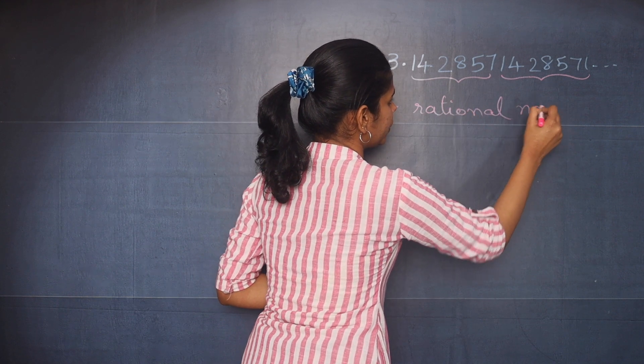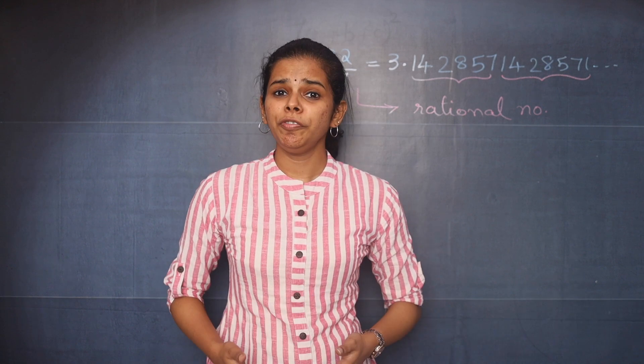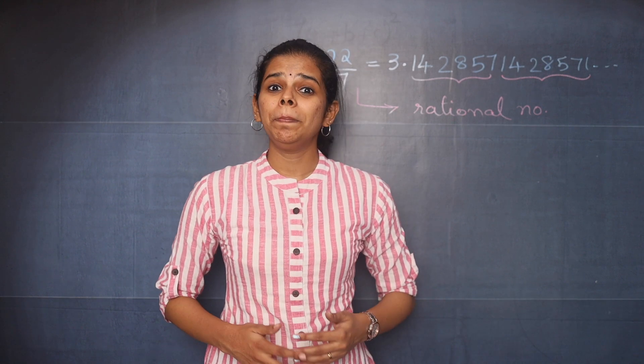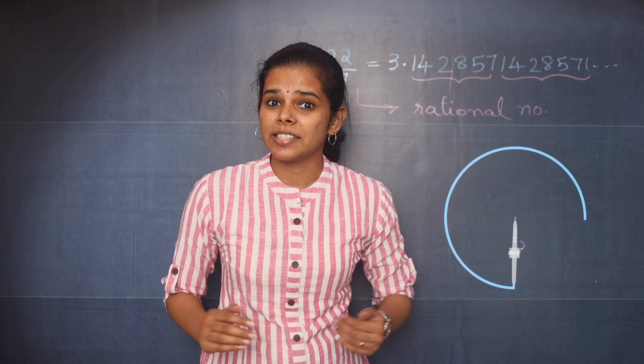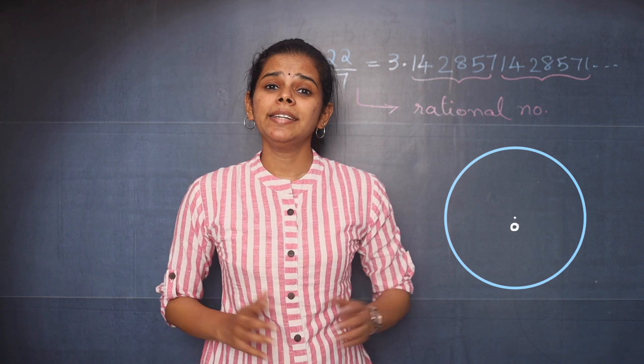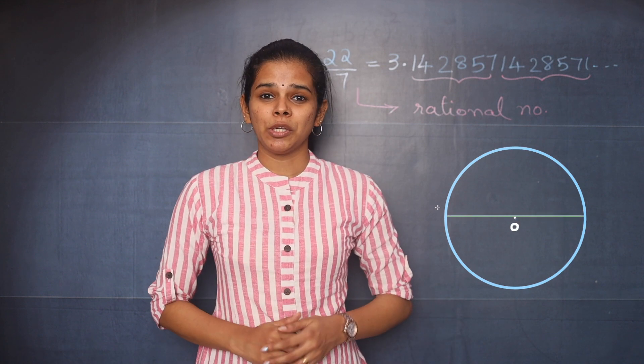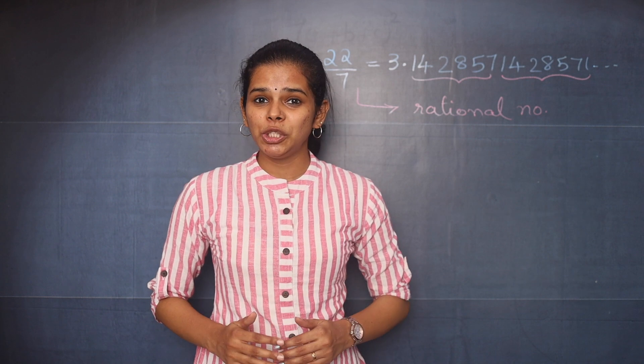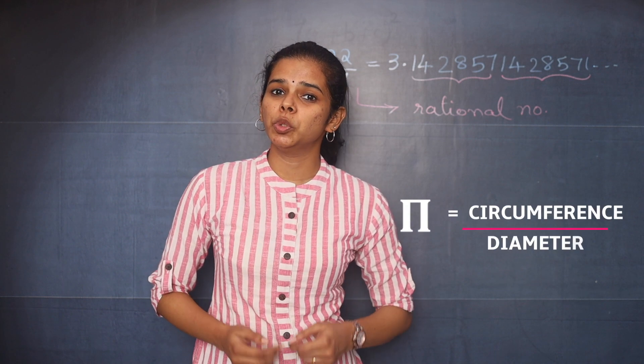Now let's move on to pi. Before we begin, what do you mean by pi? Let us consider a circle with center O and diameter AB. Pi is defined as the ratio of circumference to its diameter.